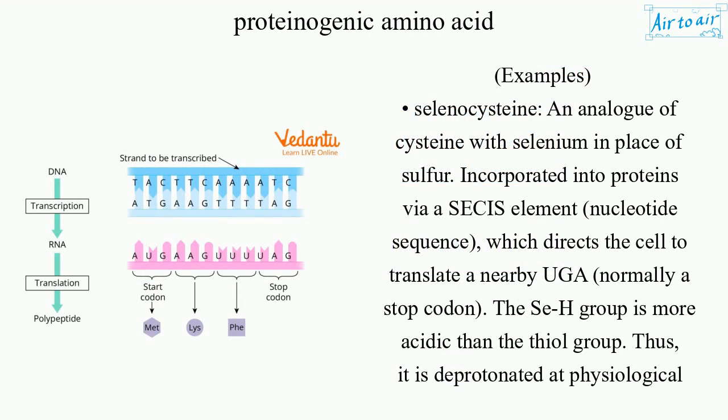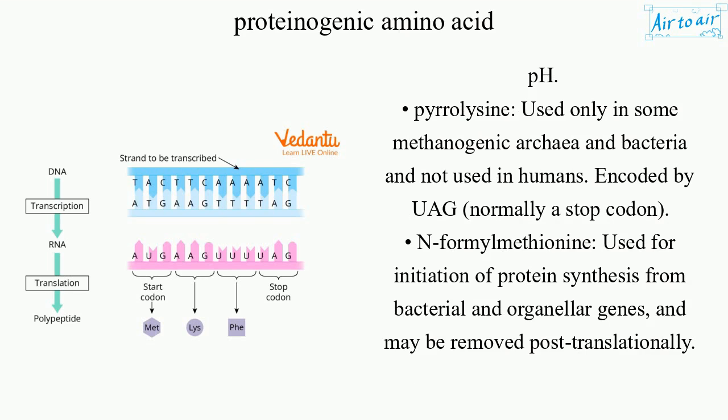Selenocysteine: an analog of cysteine with selenium in place of sulfur, incorporated into proteins via a SECIS element nucleotide sequence, which directs the cell to translate a nearby UGA — normally a stop codon. The Se-H group is more acidic than the thiol group; thus, it is deprotonated at physiological pH.